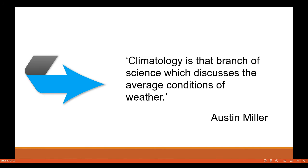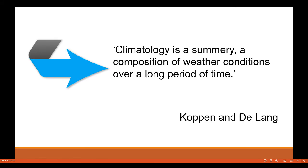According to Austin Miller, climatology is the branch of science which discusses the average conditions of weather. According to Köppen and Delang, climatology is a summary — a composition of weather conditions over a long period of time.